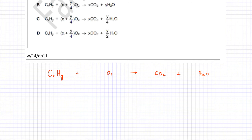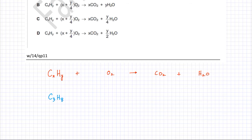We need to write a balanced equation in terms of X and Y. To explain this further, let's think of X and Y as numbers. We can use any hydrocarbon — let's say C3H8, a hydrocarbon having three carbons and eight hydrogens, or C2H4. Let's write their equations and figure out how the equation would be balanced in terms of X and Y.